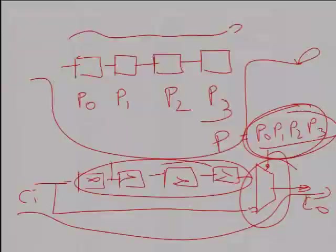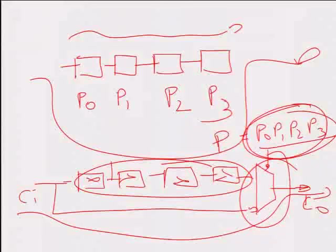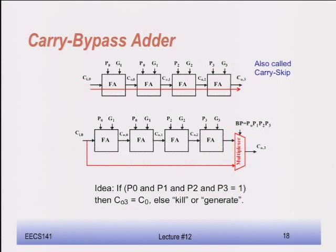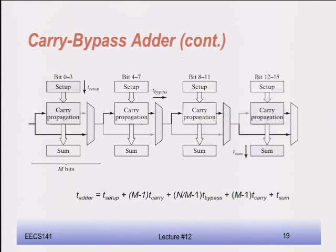So the carry bypass adder is still linear, but with better performance — I'll show you how much better shortly. The basic idea — also called carry skip — skips block after block. If P0, P1, P2, P3 are all one, then CO3 equals the carry-in; otherwise, you evaluate based on kill or generate within the block. The implementation divides a large adder into blocks of n bits: 0 to 3, 4 to 7, and so on.